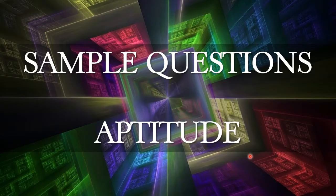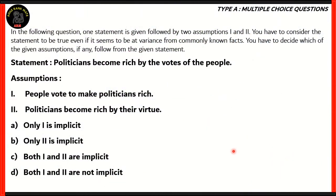Let's start off with our first question of the day. This is an assertion-reason type question. In the following question, one statement is given, followed by two assumptions, one and two. You have to consider the statement to be true, even if it seems to be at variance from commonly known facts. You have to decide which of the given assumptions, if any, follow from the given statement.